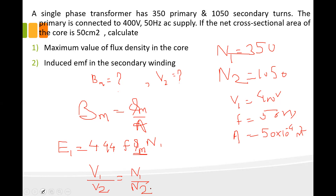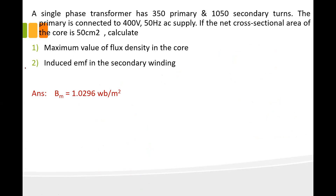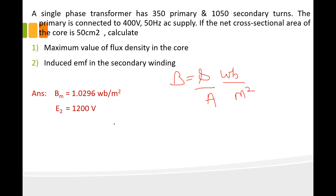The maximum value of flux density in the core is 1.0296 Wb/m². As we know, flux density B = flux / area, so the unit is Wb/m². The secondary EMF E2 = 1200 V. These are the answers based on the EMF equation. Thank you.